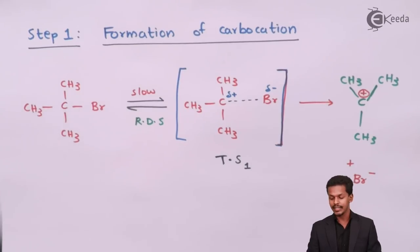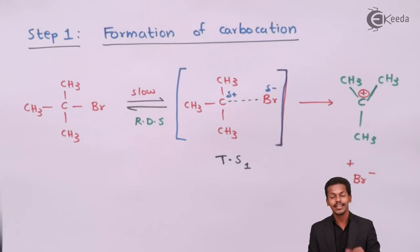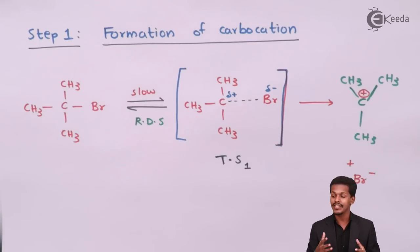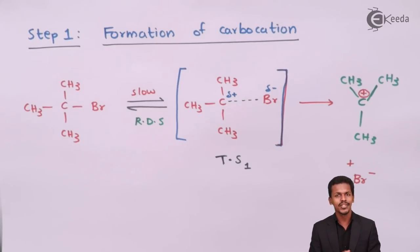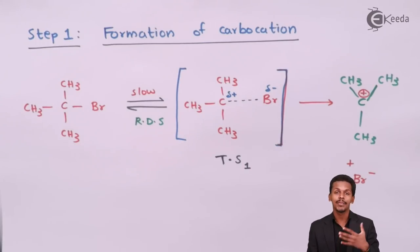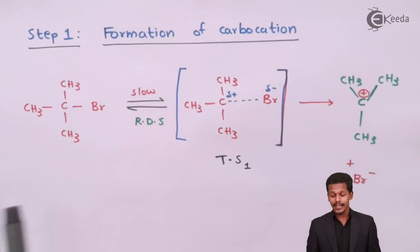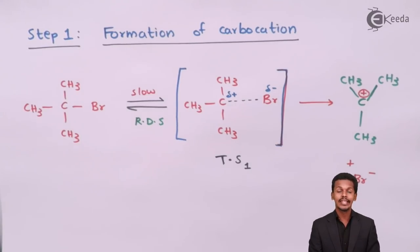The carbon originally undergoes sp3 hybridization and has a tetrahedral geometry. When the sp3 hybridized carbon atom is converted into a carbocation, it becomes sp2 hybridized. The bond angle around this carbon is now 120 degrees and the geometry changes from tetrahedral to trigonal planar. The carbocation formed in step one is now involved in step two with the nucleophile.